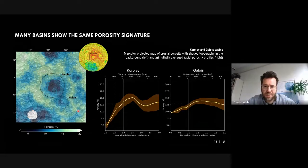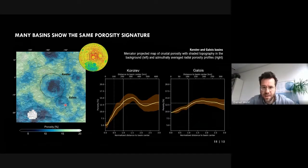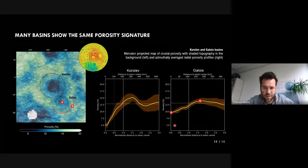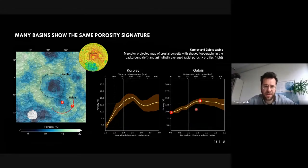These effects had been suggested by numerical modeling simulating impact cratering, and now for the first time they could be confirmed by observations. Galois Basin, located next to Korolev, was formed subsequently, so the initial porosity of the target rock was already high when the impact happened. While Korolev shows a very pronounced signature, Galois Basin shows a similar pattern — low porosity in the center and high porosities farther outside — but with a muted signature.